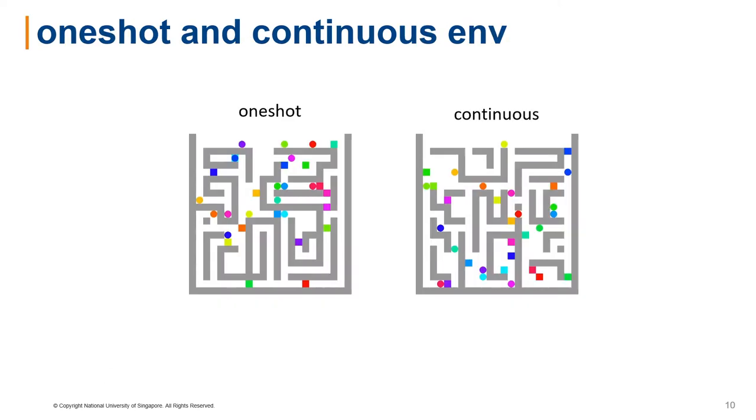We consider two variants of MAPF, one-shot MAPF and lifelong MAPF or continuous MAPF. In one-shot MAPF, the agent disappears from the map immediately upon reaching its goal.